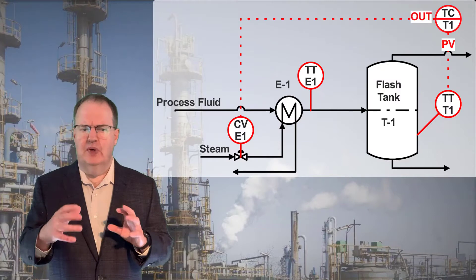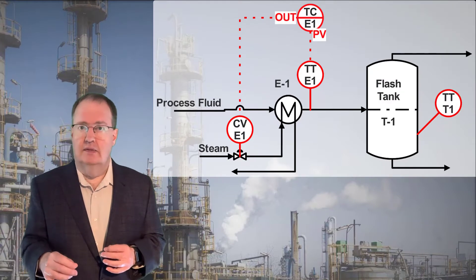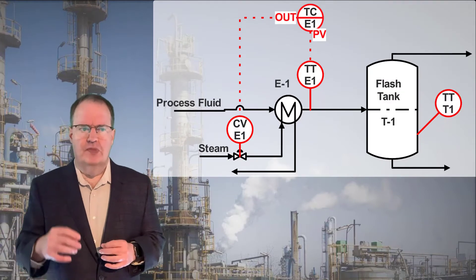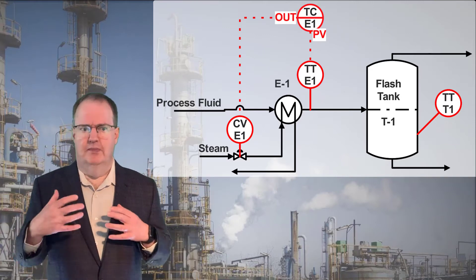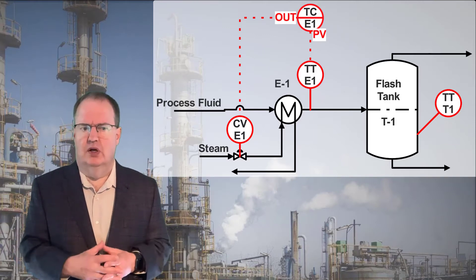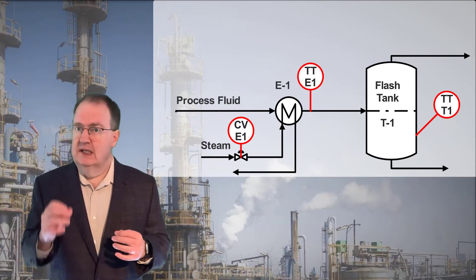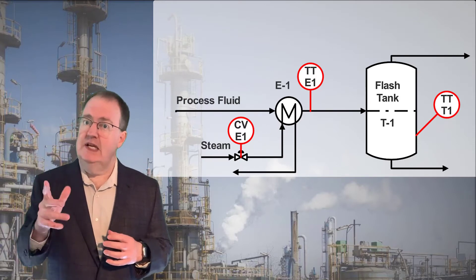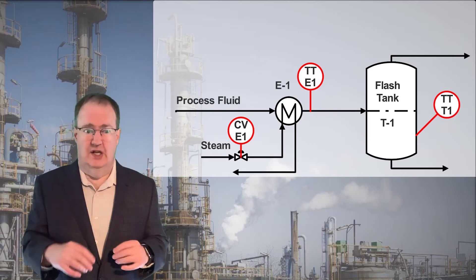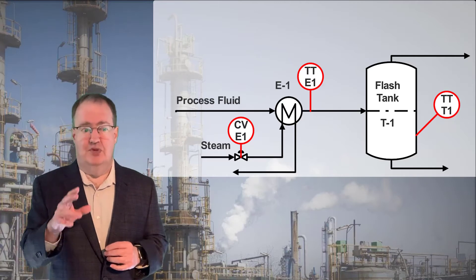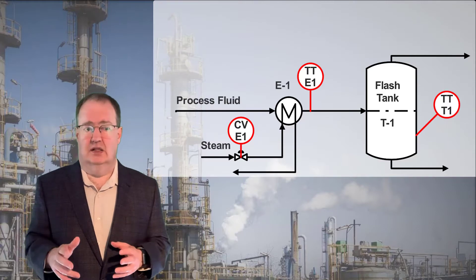Too bad we can't control TT E1 instead. That would be a fast loop, and the resulting control performance would be much superior. But TT E1 isn't our objective — TT T1 is. And while they're dependent on each other, they're not going to be the same temperature, and they're not going to change identically.